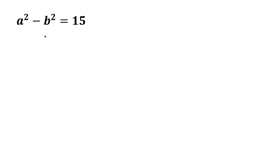In this video, I am going to show how to find the solution of a² − b² = 15, where a and b are natural numbers — that means a and b belong to ℕ, the set {1, 2, 3, …}.